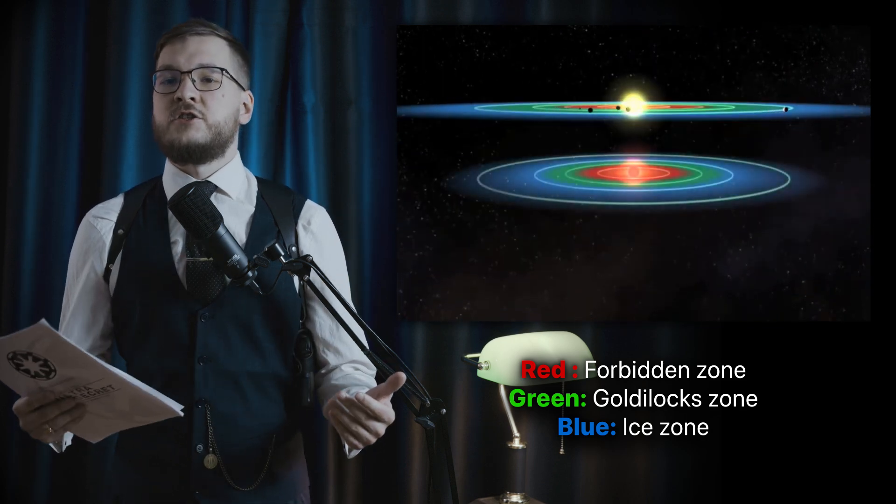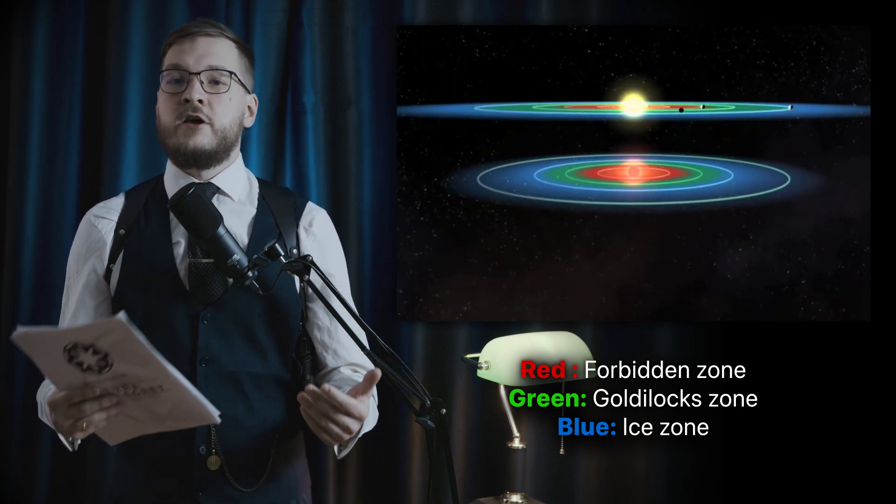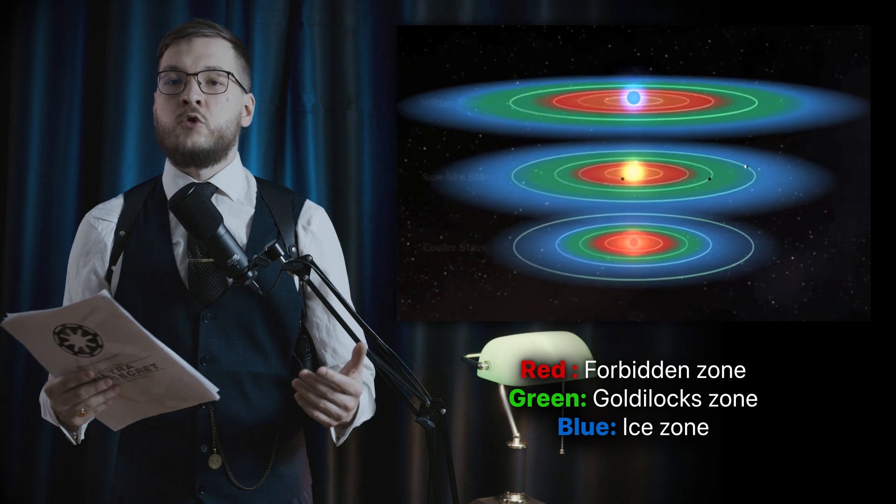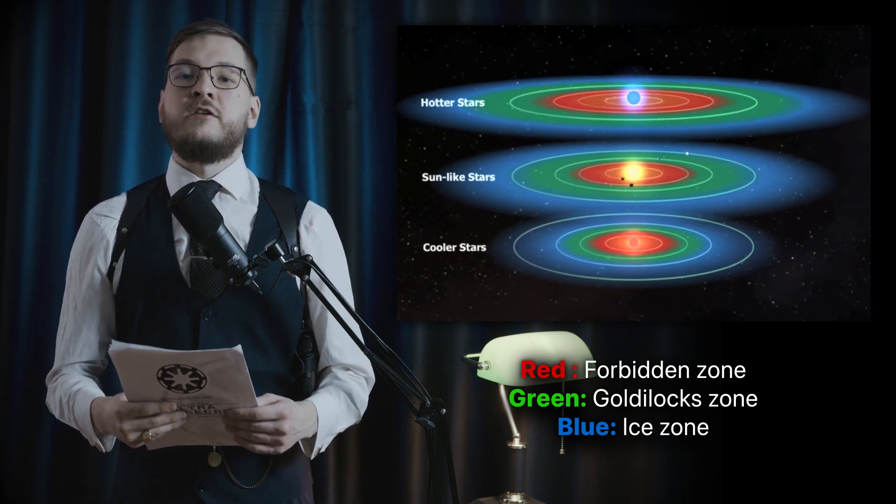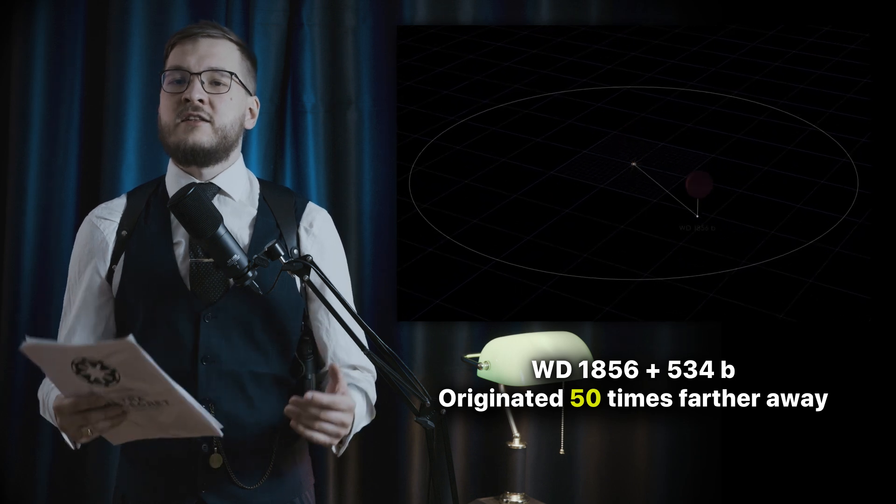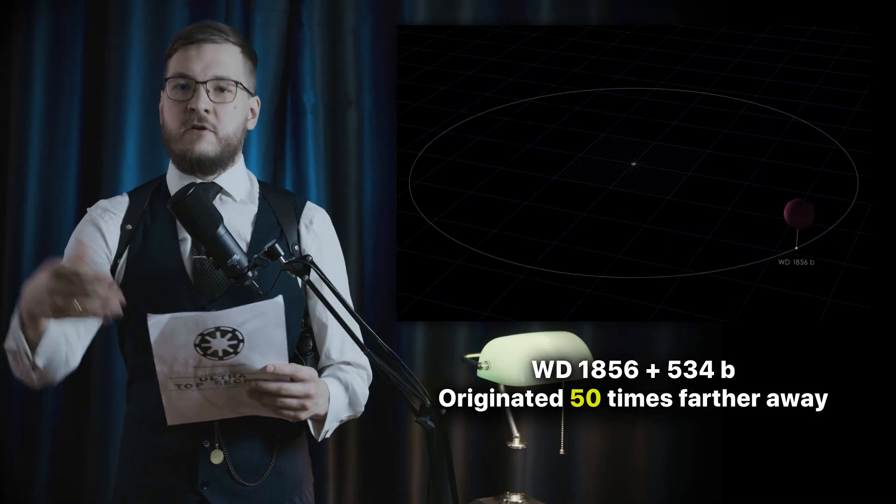The planet's survival suggests that planetary migration into close orbits around white dwarfs is possible. Astronomers estimate 534 b must have originated at least 50 times farther away. 534 b's discovery not only sets a